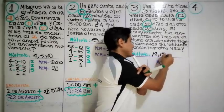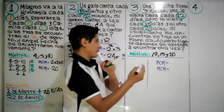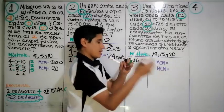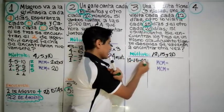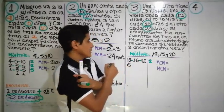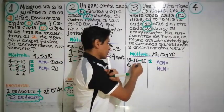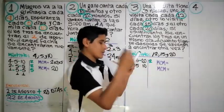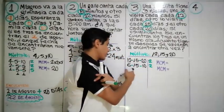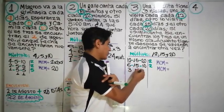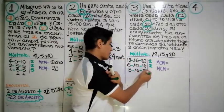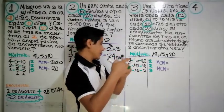Debemos calcular el múltiplo común de doce, quince y veinte usando el mínimo común múltiplo. Dividimos entre dos: doce da seis, quince no tiene y baja, veinte da diez. Seguimos dividiendo entre dos: seis da tres, diez da cinco. Luego sacamos entre tres: tres da uno.